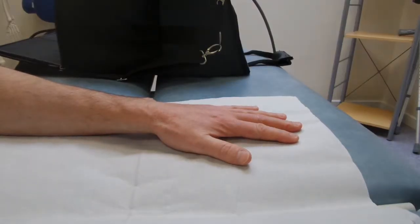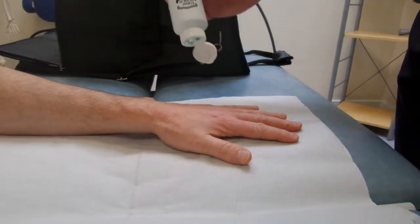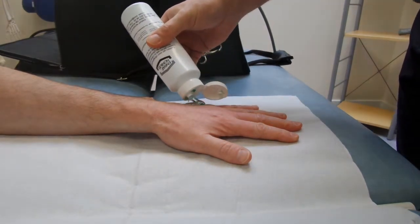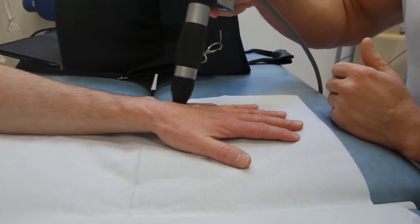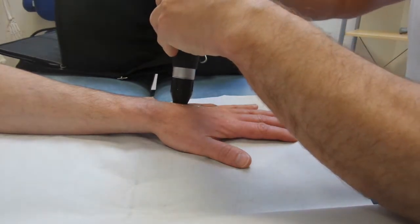We're back with the hand now. Apply some gel into the gutter between the two metacarpals. This is where the scar tissue is. Just spread out the gel and start the shockwave.